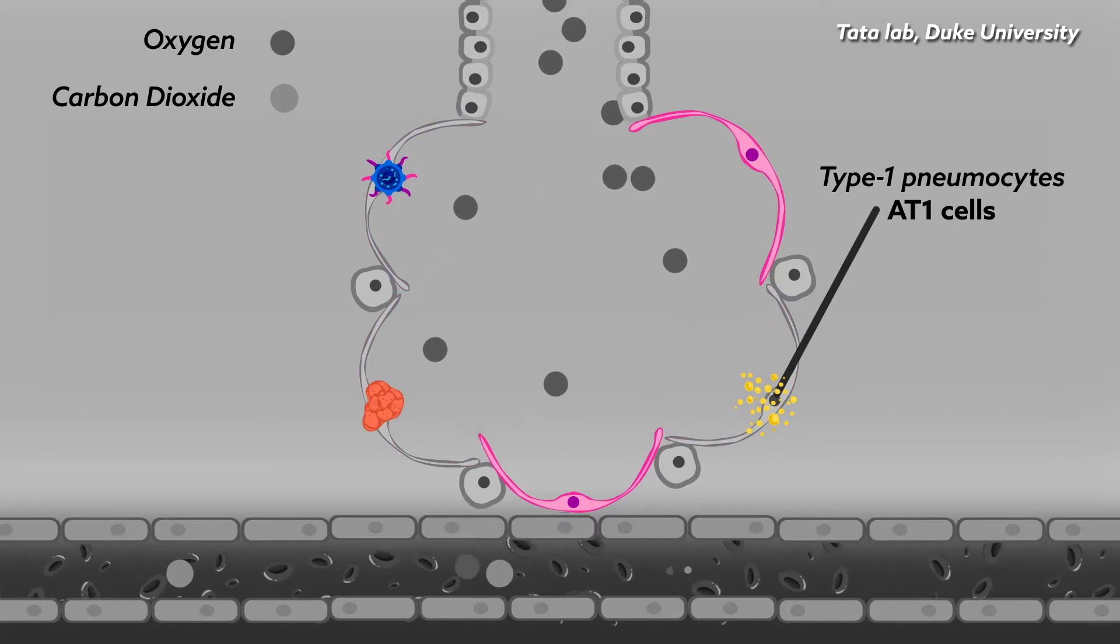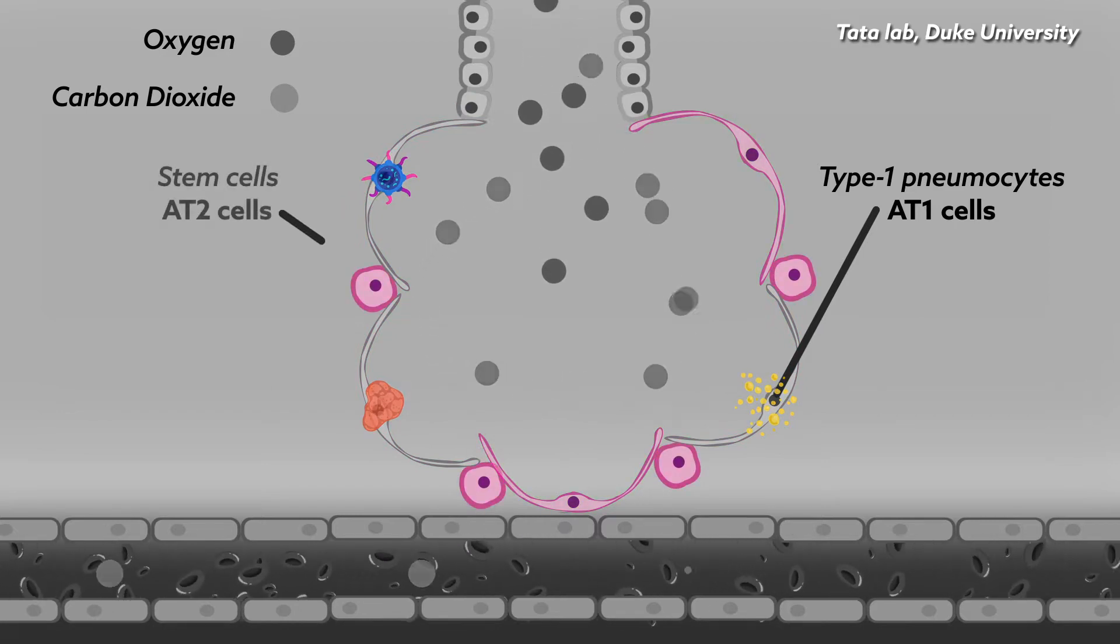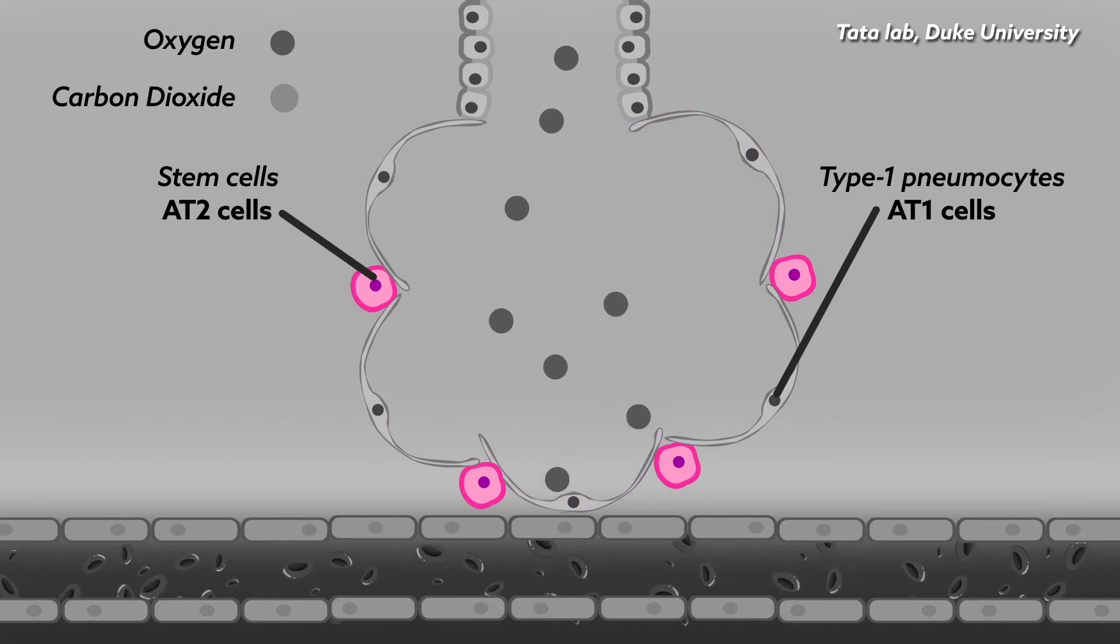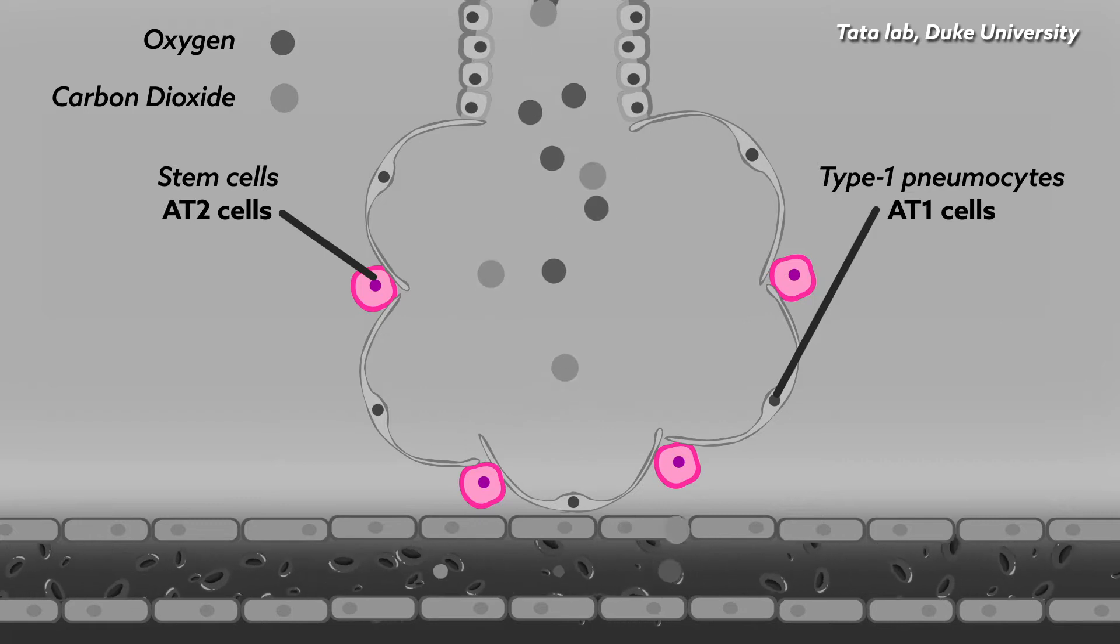Fortunately, lung tissues also have specialized stem cells, called AT2 cells, that can replace damaged AT1 cells. But exactly how these cube-shaped AT2 cells generate large, flat AT1 cells has remained something of a mystery.